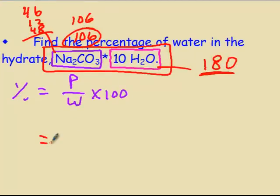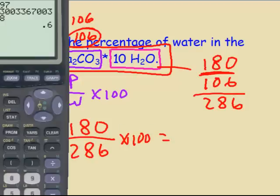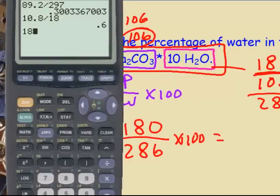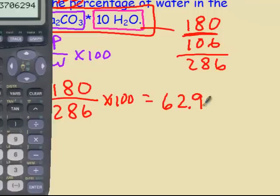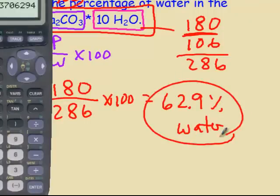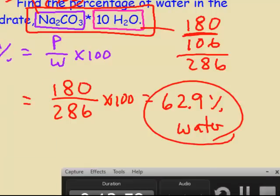The part over the whole for the percent of water. The part is 180, because that's the mass of water, over the whole thing. So 180 plus 106 gives us 286. So 180 divided by 286 times 100, and I get 62.9 percent water. So this hydrate is 62.9 percent water. There's hydrates. Good luck.